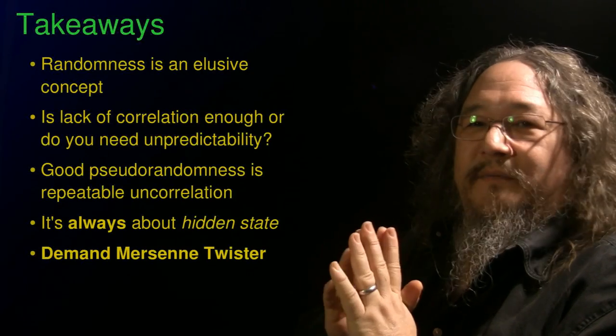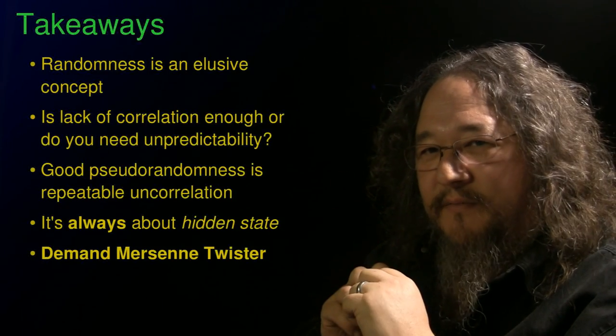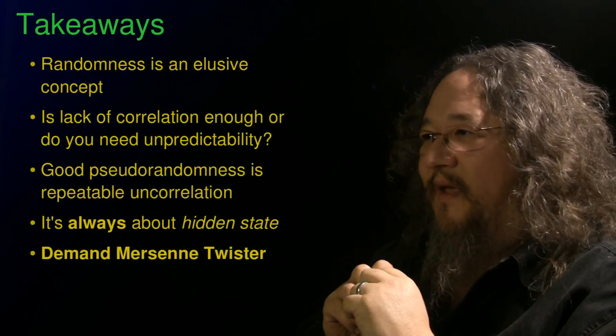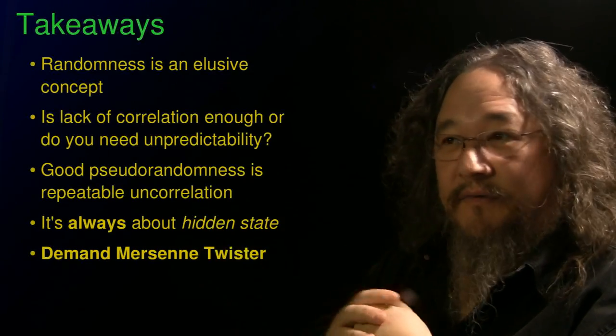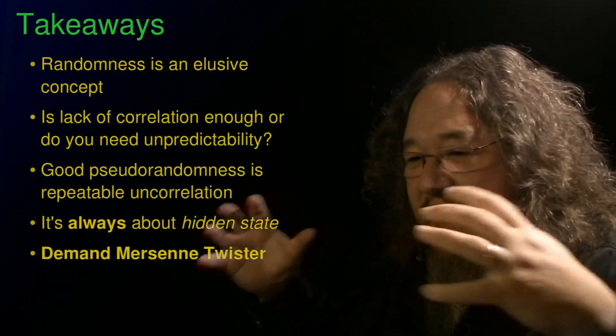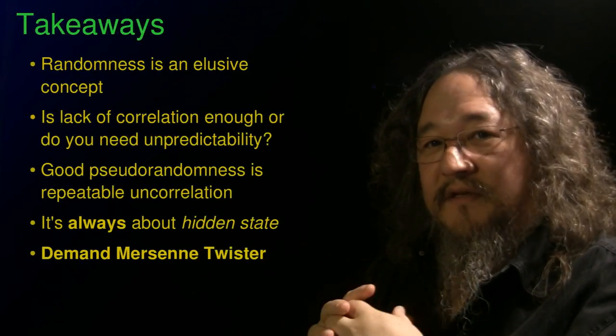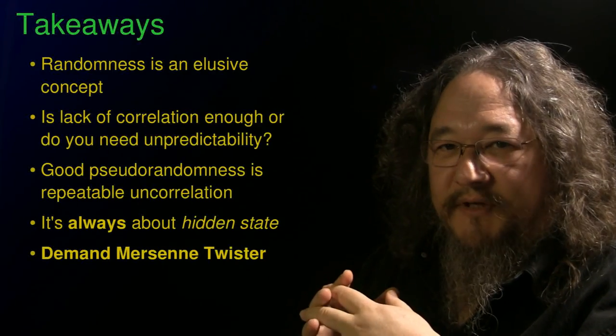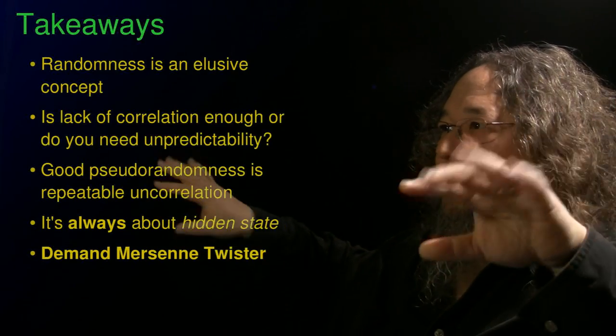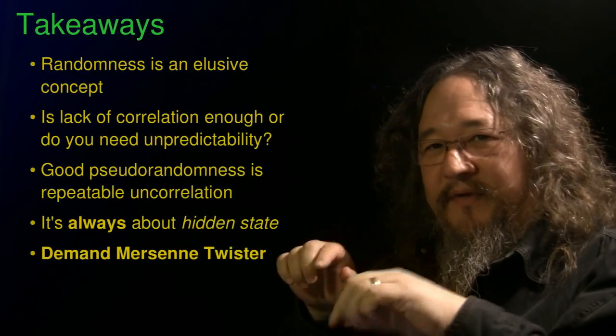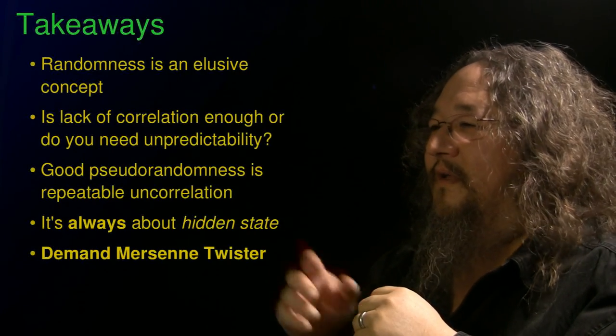There's also random number generators that I haven't talked about that are in computers that are claimed to be real random number generators. And the way they work is by using timings of mouse clicks and keyboard types and packets arriving and stuff coming from the disk, and they mix it all together under the assumption that there's no pattern to all of that stuff put together. And it's probably true. It may be true. But who knows? That's just saying there's state in the outside world. There's state in the user's head about the timing of when they do things that we can exploit to make numbers that are unpredictable.